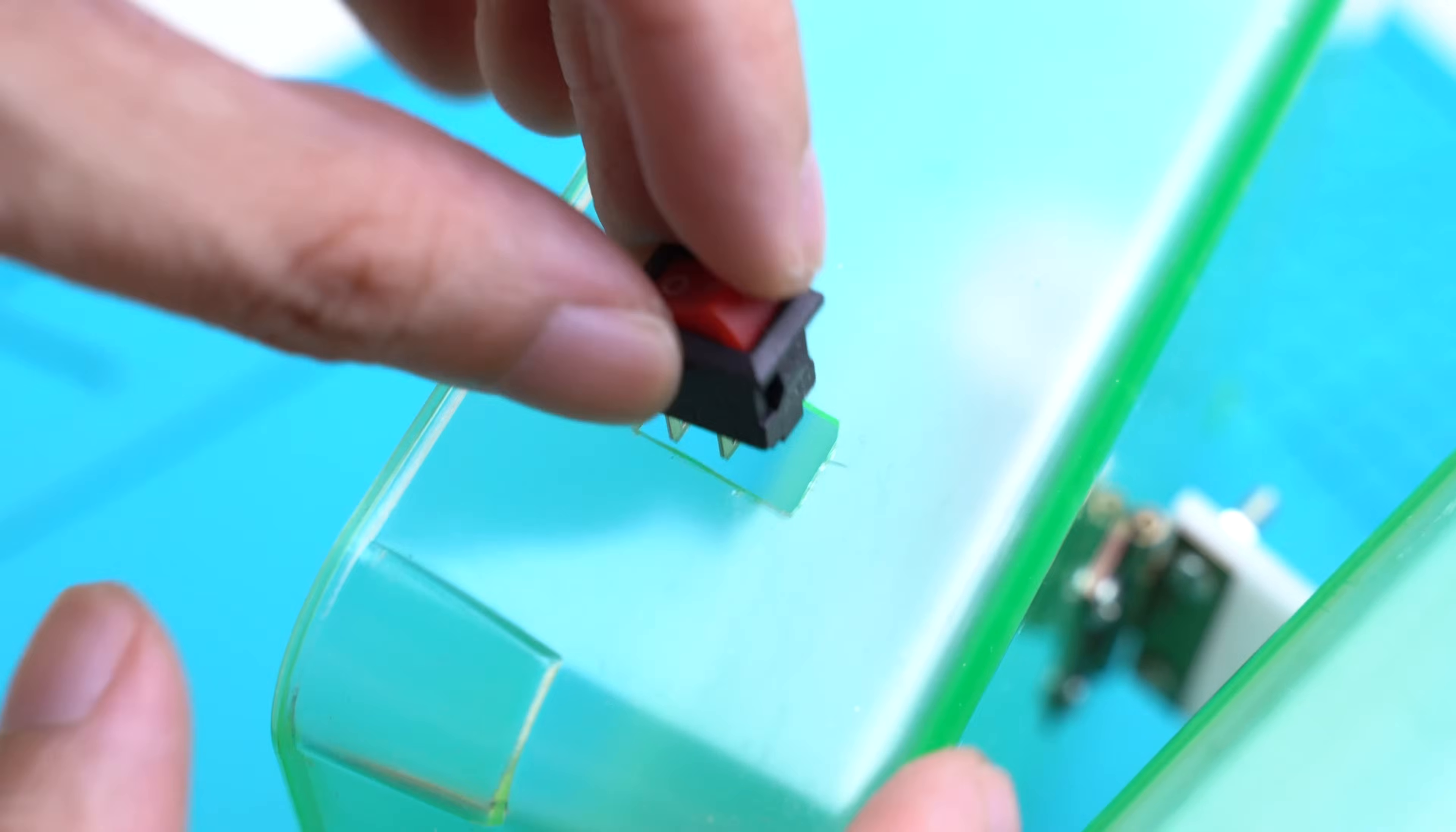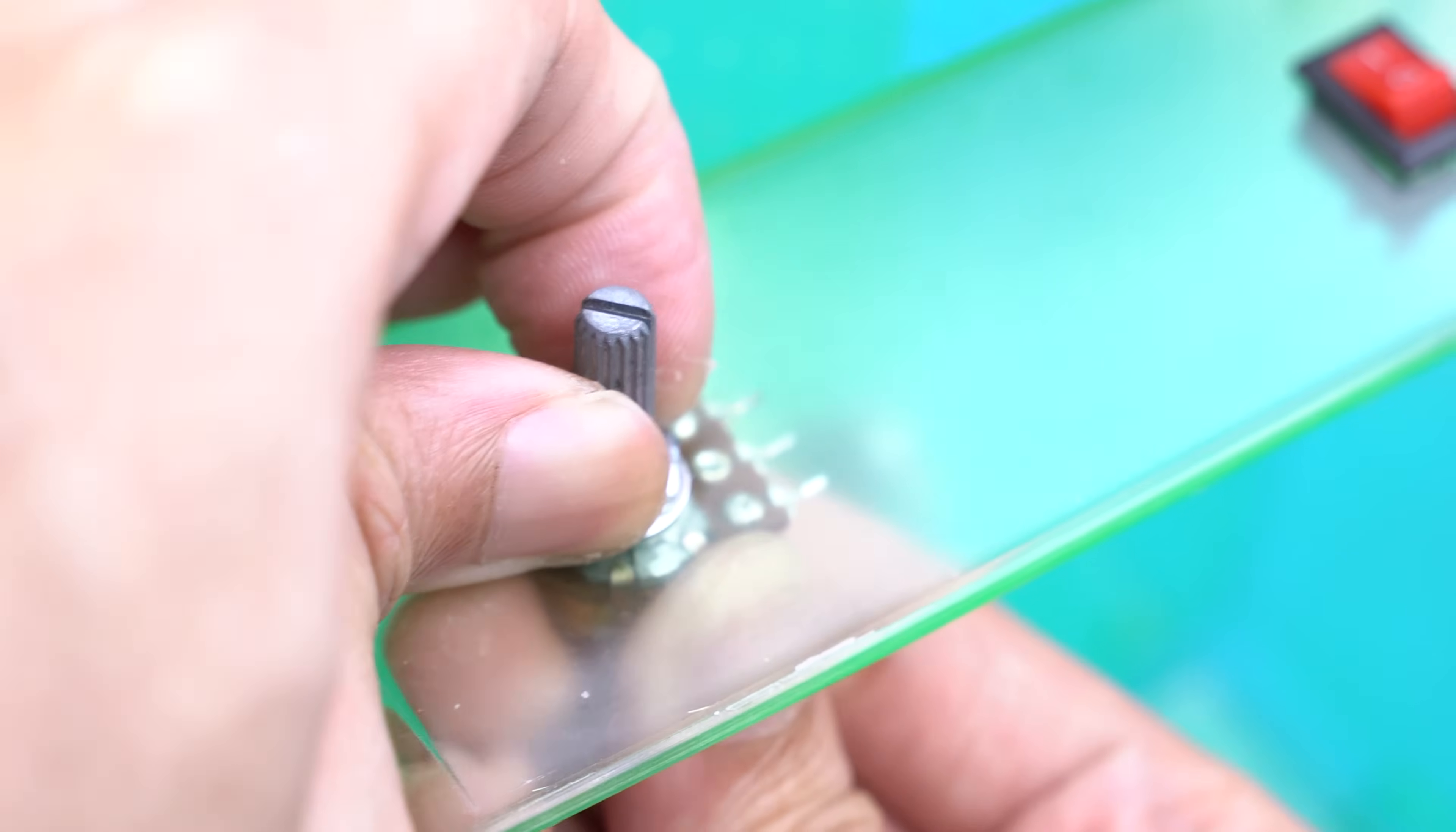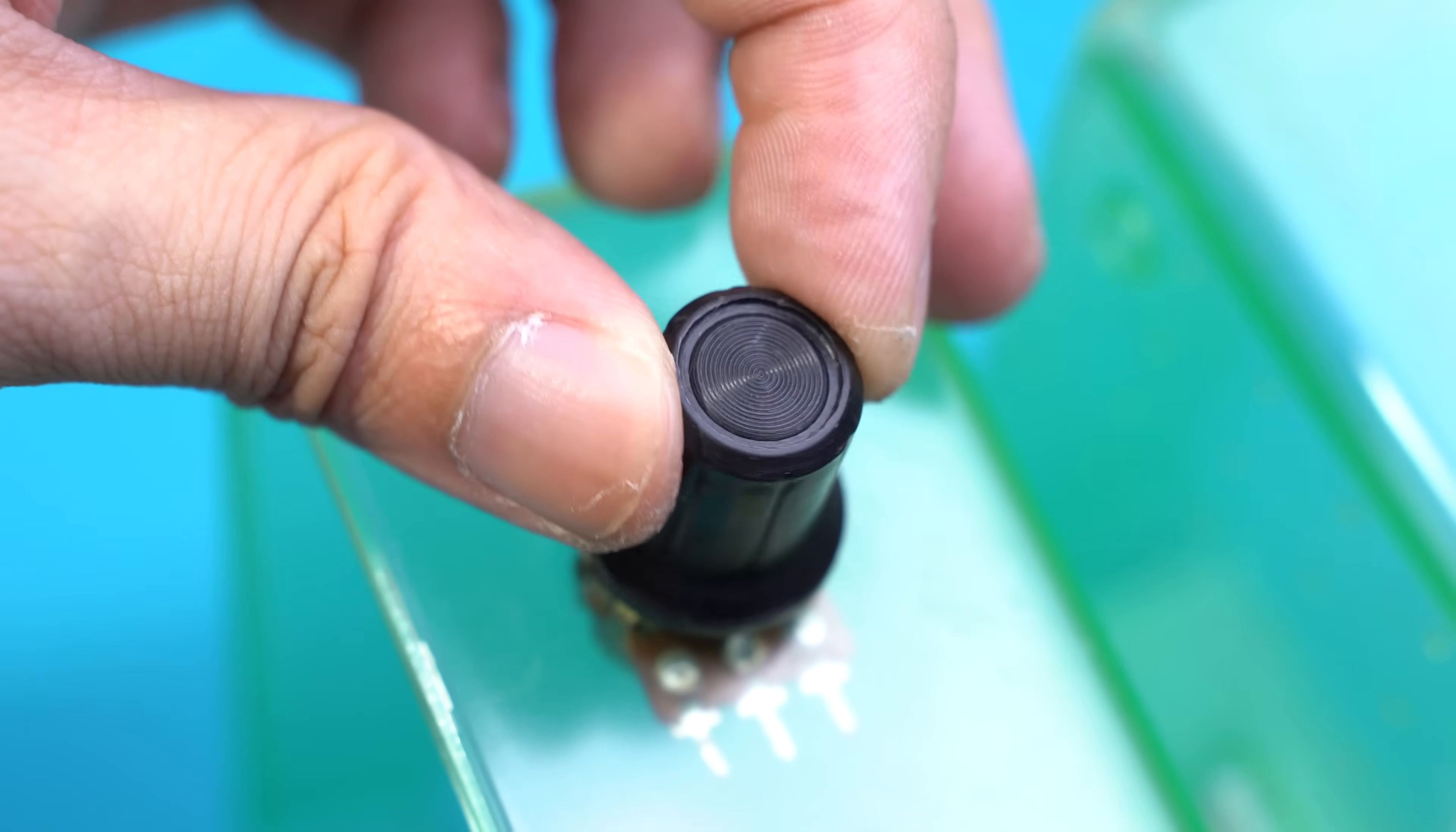Superglue the DC jack, snap on the switch, and the potentiometer. Use the provided washer and nut to properly mount the potentiometer. You can choose to add the plastic knob to make your project look better.